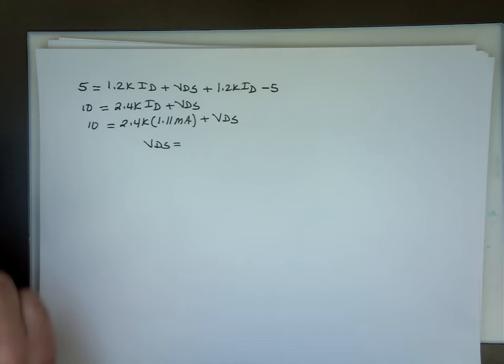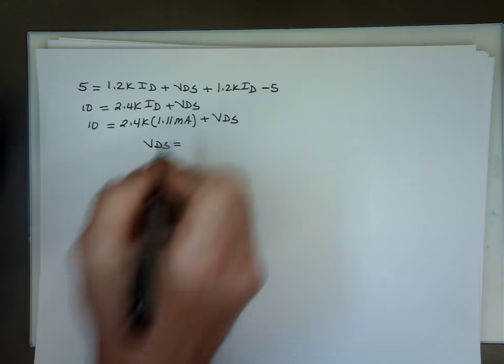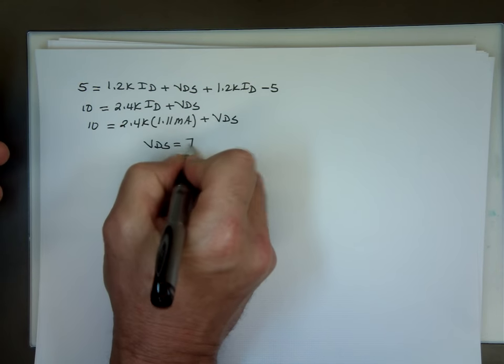It's going to be what? 10 minus 2.4 EE to the 3 times 1.11 EE to the negative 3. These cancel each other out, the 3s. And I've got a syntax error. 10 minus 2.4 times 1.11. Let's try again. 10 minus, I'm horrible with calculators, 2.4 times 1.11. I've got VDS equals 7.34, roughly, volts.